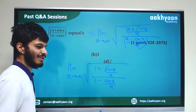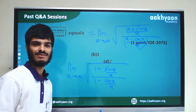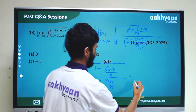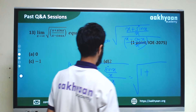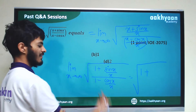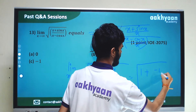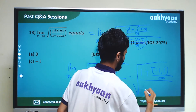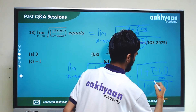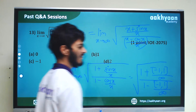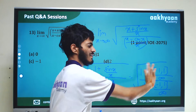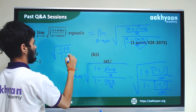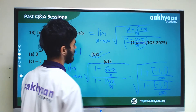Now when x tends to infinite, sin x by x and cos x by x both tend to 0, since any value divided by infinite is 0. So we get root of 1 plus 0, divided by 1 minus 0, which equals 1. So these are the correct options.